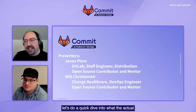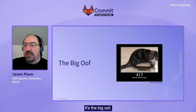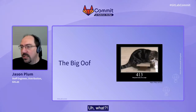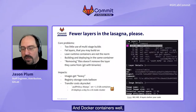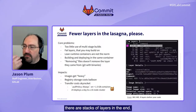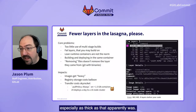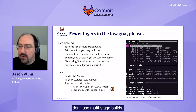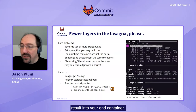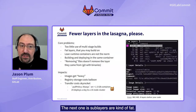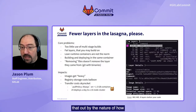So, let's do a quick dive into what the actual issue we're going to talk about. It's the big oof. When things get heavy, there are problems. Docker containers — well, containers in general — are stacks of layers in the end. And the problem is, when the cat gets too big, you need to stop feeding it so much lasagna. A lot of people don't use multi-stage builds. These allow you to build things in stages and only put the necessary result into your end container. The next issue is some layers are kind of fat, and then you go and build on top of that, and there's nothing you can do to trim that out by the nature of how layers inside of containers work.